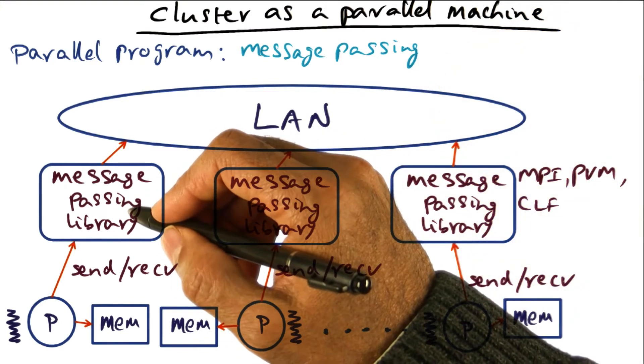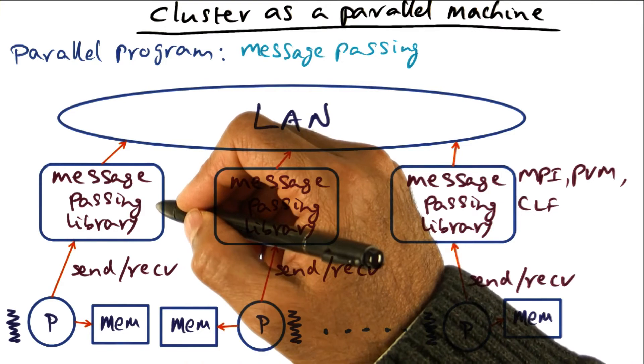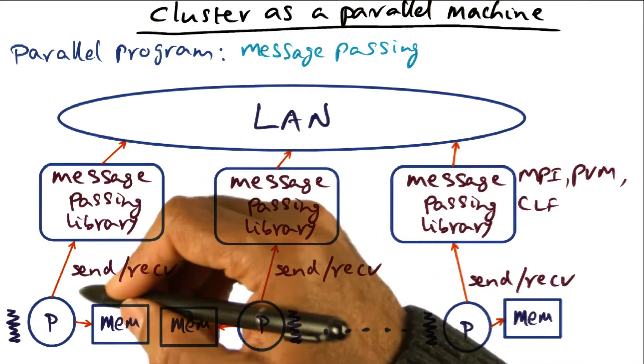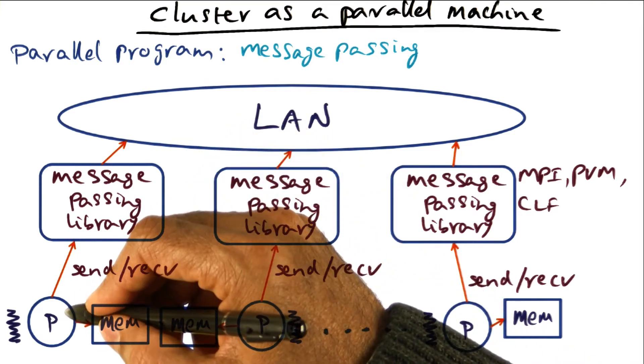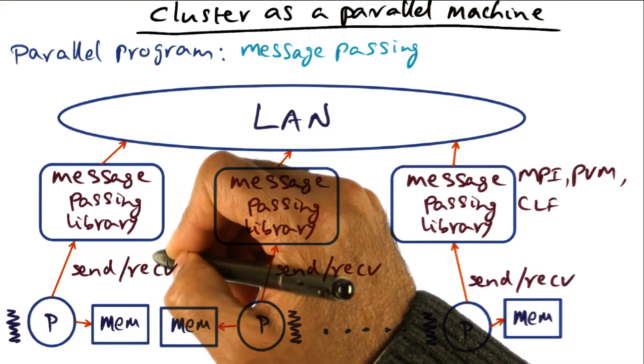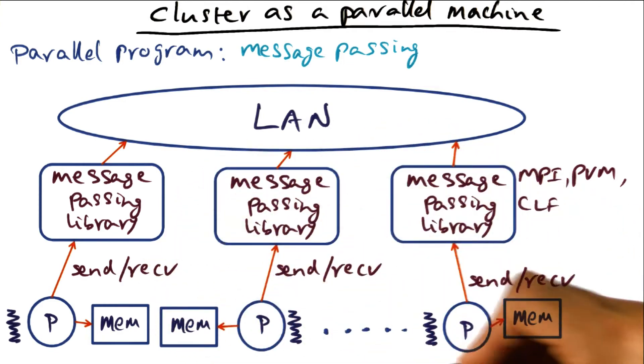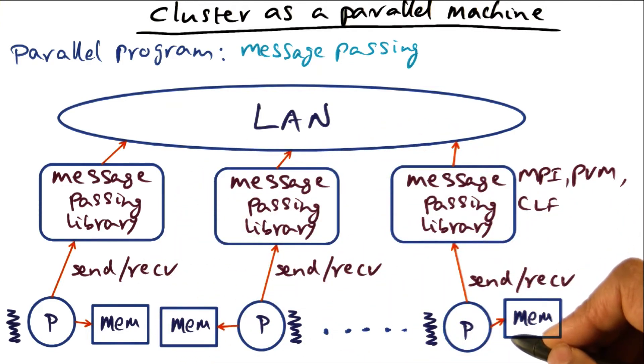The runtime system is going to provide a message passing library which has primitives for an application thread to do sends and receives to its peers that are executing on other nodes of the cluster.